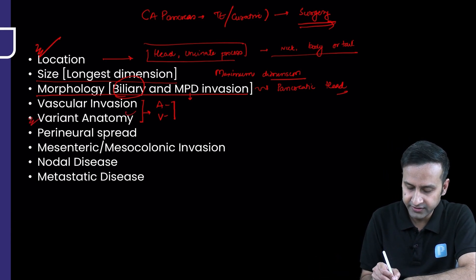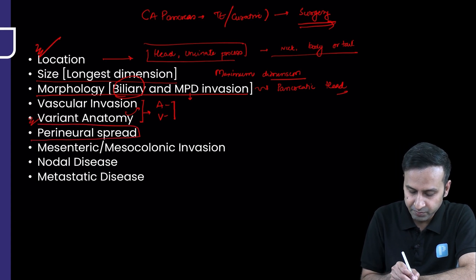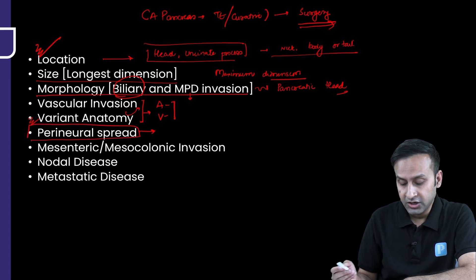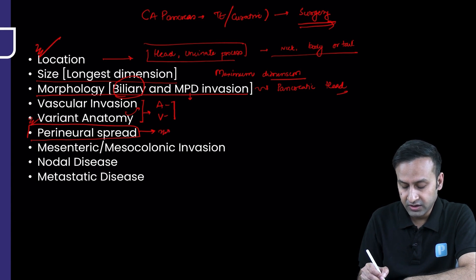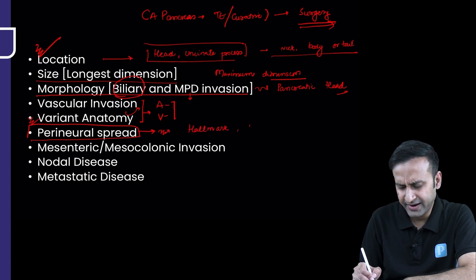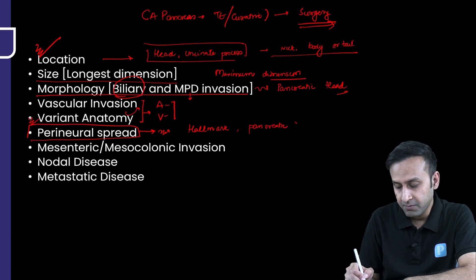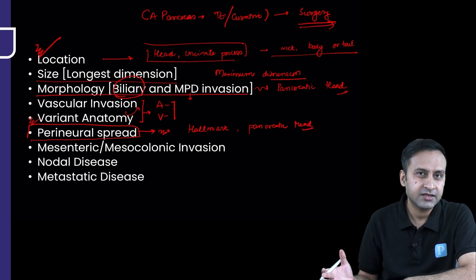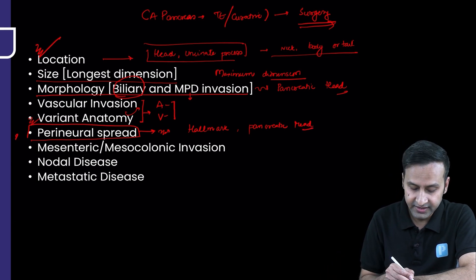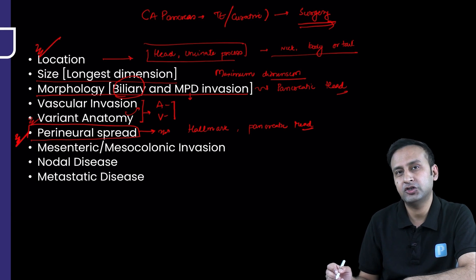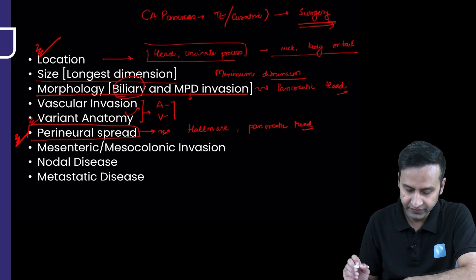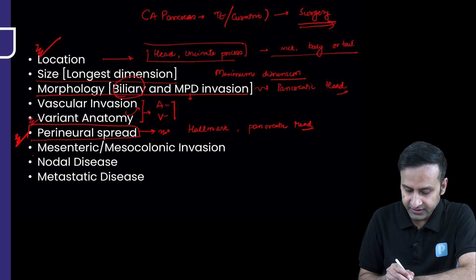You need to be completely sure about arterial and venous invasion by looking at many cases. Variant anatomy is part of the arterial invasion assessment, and we'll discuss that in detail. Something relatively new is perineural invasion — a classical hallmark of pancreatic head malignancies. You may have heard of perineural invasion in head and neck carcinomas, but in pancreatic head regions it has been recently studied and discovered. We'll cover how to identify it in detail.